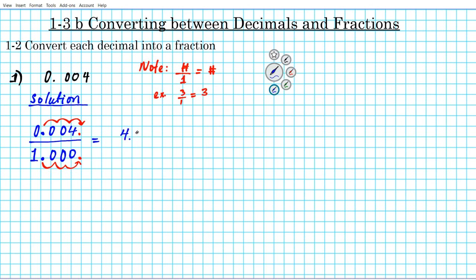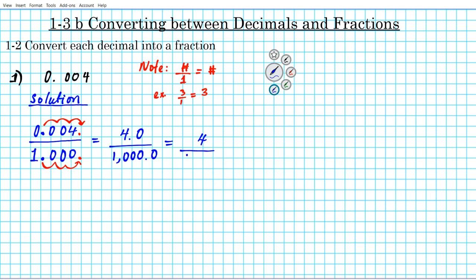After the move, the numerator becomes 4.0, which we write simply as 4. In the denominator, 1.000 moved three places to the right becomes 1000. So 0.004 as a fraction is 4 over 1000 — four thousandths. You can also use place value to do this calculation, which works sometimes but not every time.